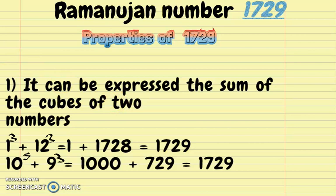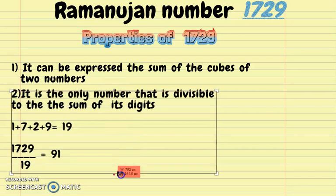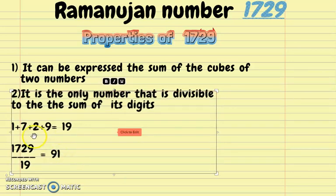The second property is that it is the only number divisible by the sum of its digits. If we add 1 + 7 + 2 + 9, you get 19. If we divide 1729 by 19, we get 91, showing that 1729 is perfectly divisible by 19.